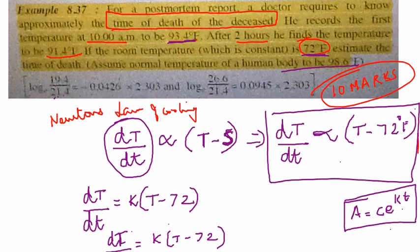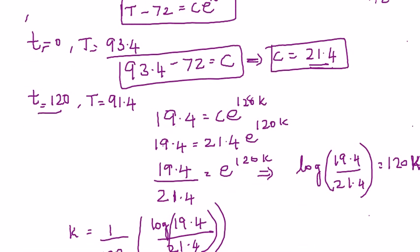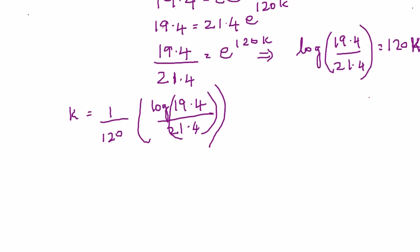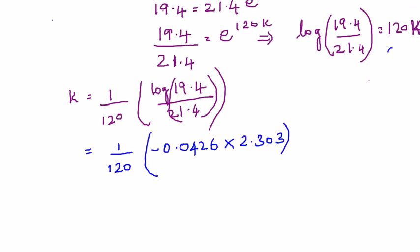We have found k and C. Now we need to find the time of death. To do this, we estimate how much time elapsed after the person died. If we can find the elapsed time since death, we can calculate the actual time of death.